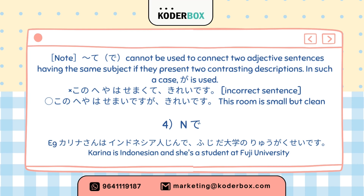Grammar 4: noun + de. Example: Kareena san wa Indoneshia-jin de, Fuji daigaku no ryugakusei desu — Kareena is Indonesian and she is a student at Fuji University.